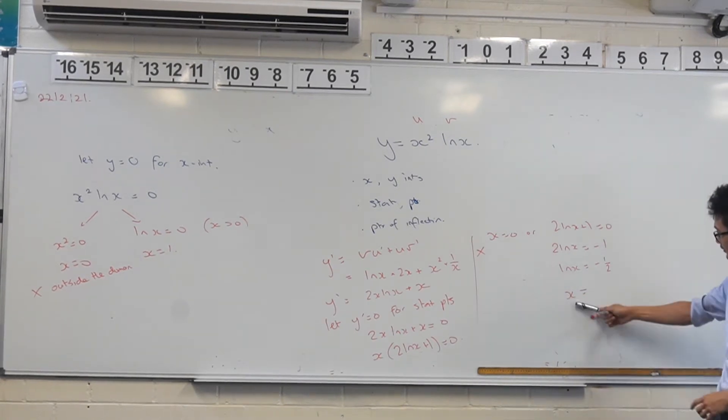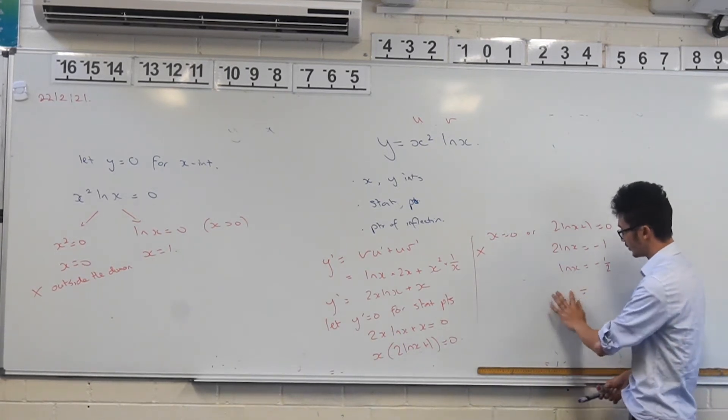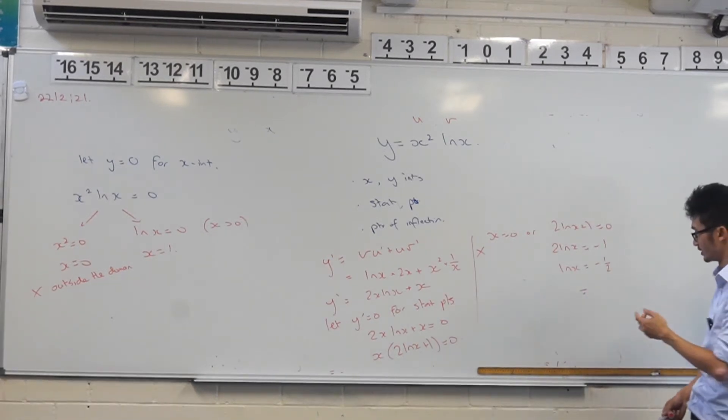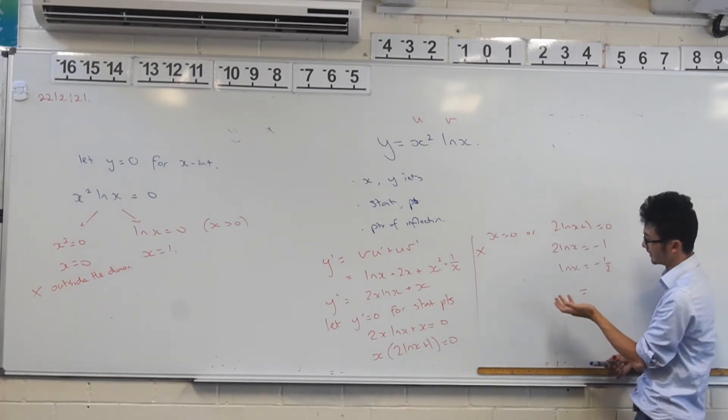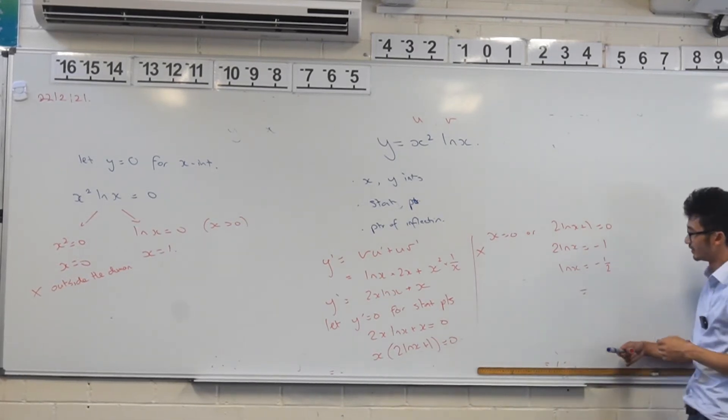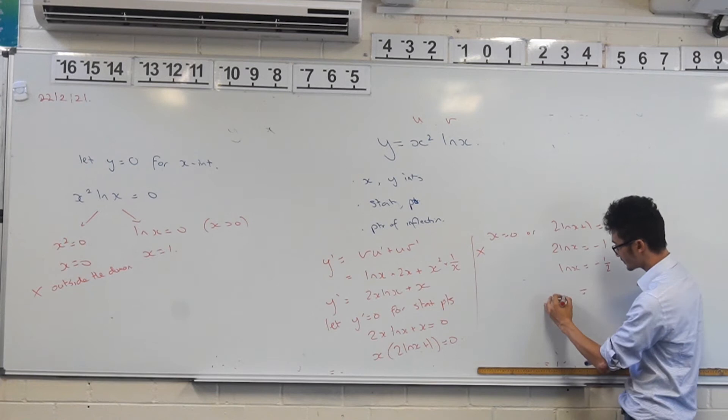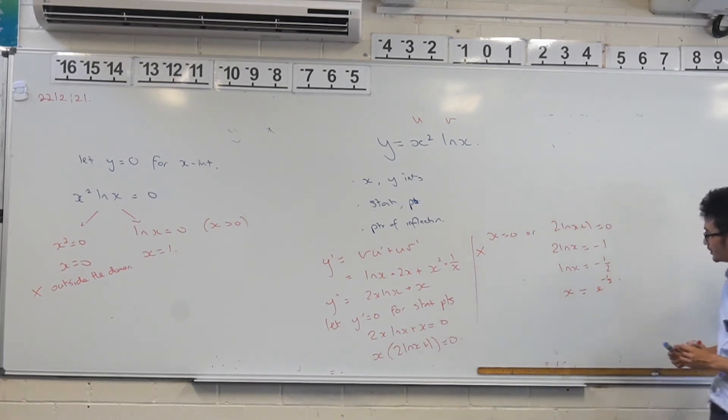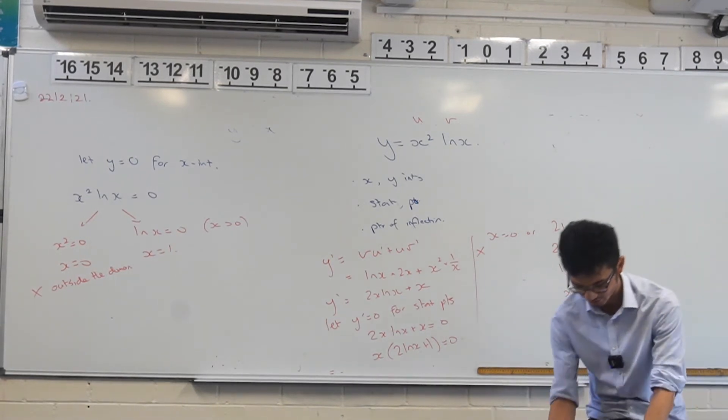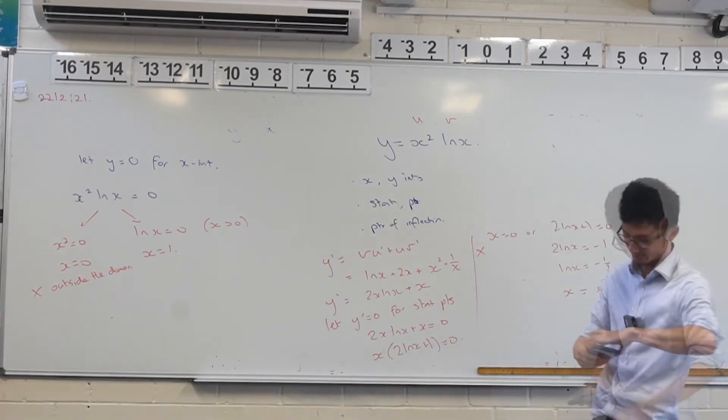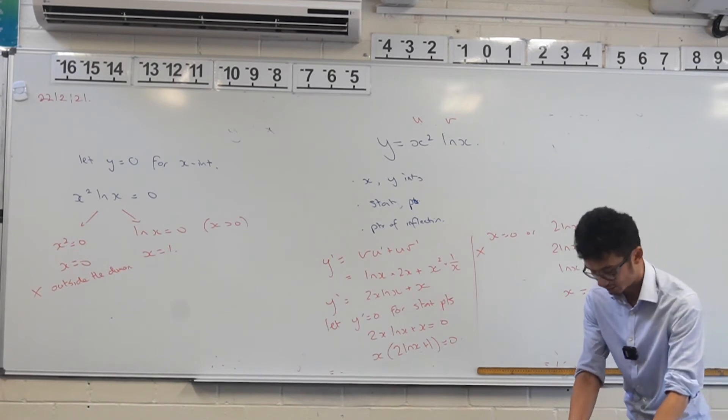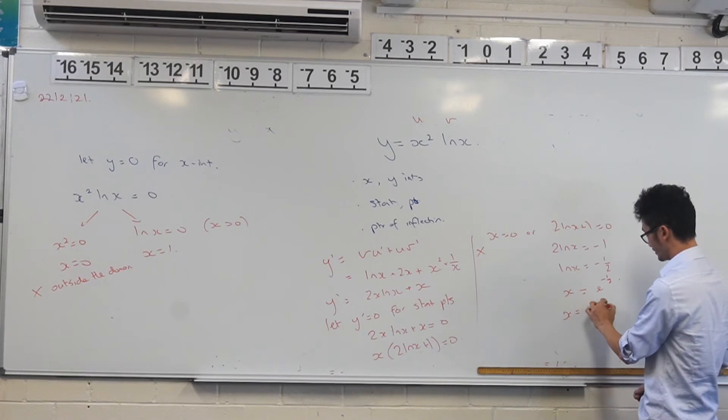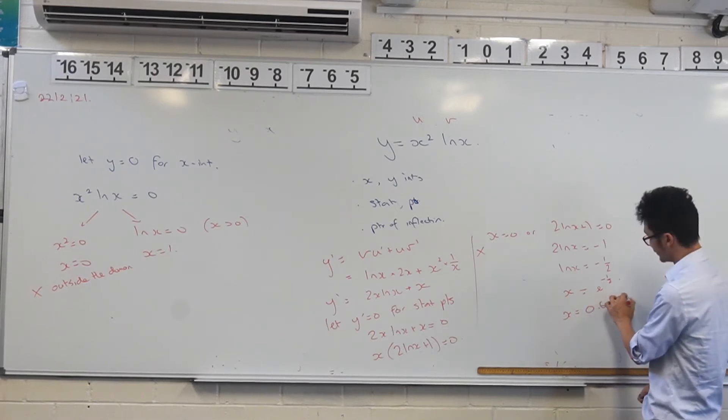So we've got x equals to zero or 2 ln of x plus one equals zero. Same thing here. We reject this one for the same reason. So 2 ln of x equals to negative one. ln of x equals to negative half. So how do you solve an equation like this? The way that you do it is you use these inverse operations. So we raise both sides to the base e, because this is log base of e here. So that's going to be x is equal to e to the negative half. So far so good. What is that as a decimal value? 0.6. So that gives us an indication of where we're going. x equals to 0.6 something.